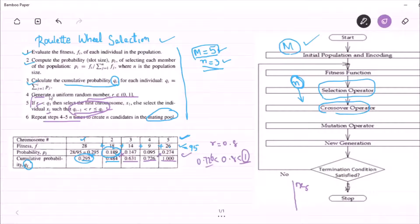And two more to be there in the mating pool. Now again, go to step 4 and let's say r equal to 0.18. If it is 0.18, we found that r is less than q1.